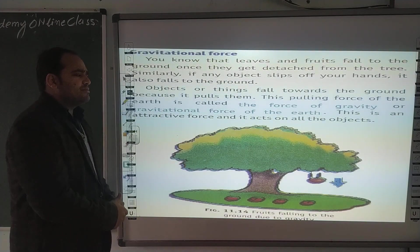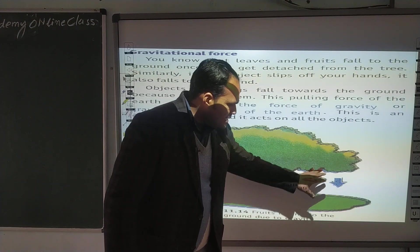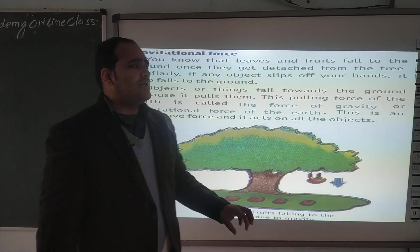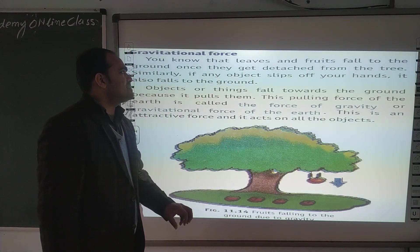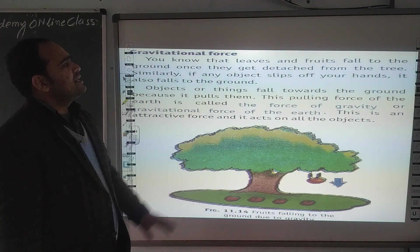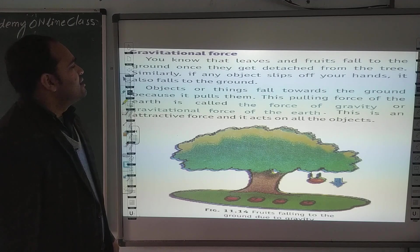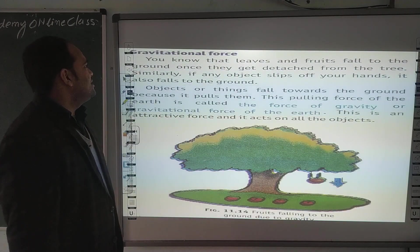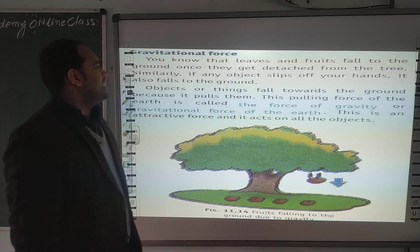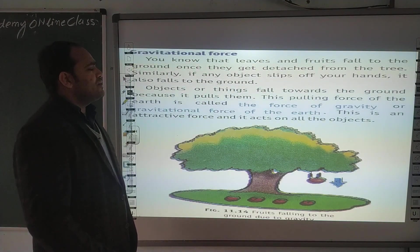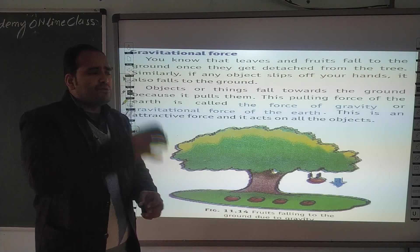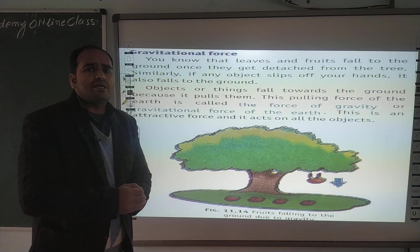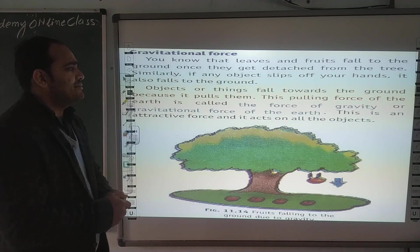Next है gravitational force। Newton ने सबसे पहले — आपने ये कहानी सुनी होगी — कि apple जब नीचे गिरता है, तो वो क्यों गिरता है? Due to gravitational force। You know that leaves and fruits fall to the ground once they get detached from a tree. Similarly, if any object slips from the hand, it also falls to the ground। क्यों नीचे ही आता है, ऊपर क्यों नहीं जाता? इसके लिए एक earth का force होता है, उसे gravitational force कहते हैं।